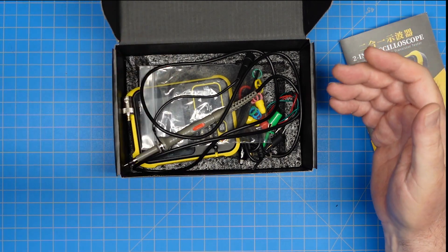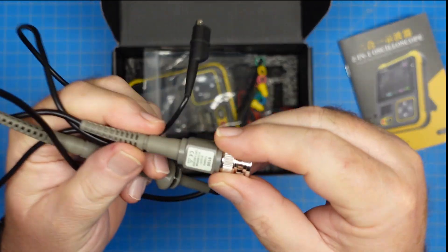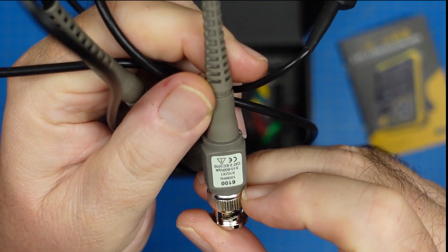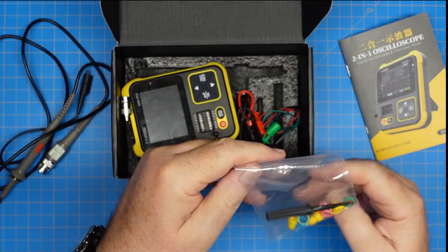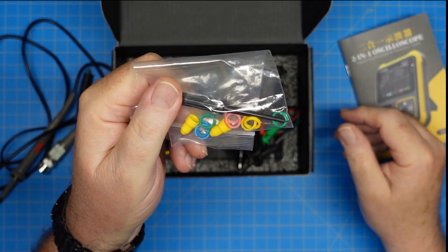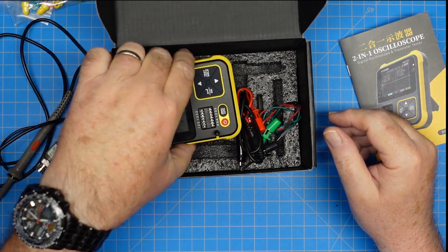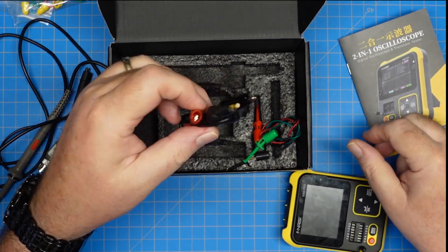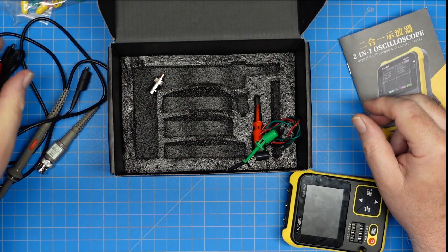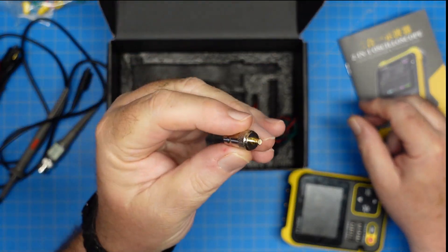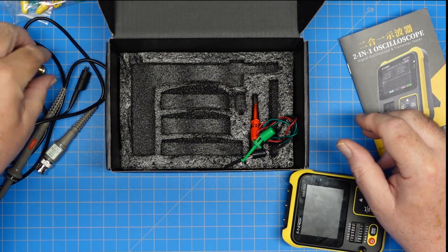It comes with all the things you'd expect an oscilloscope to come with. We have a probe. This is a 100 megahertz, one or 10 probe, and it can be calibrated to that end. Here is the calibration tool, as well as the color bands and all the other little case candy that comes with oscilloscope probes. It comes with a set of alligator clips to hook up directly for testing. It comes with this adapter, which is MCX to BNC.